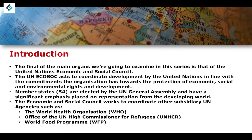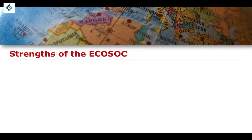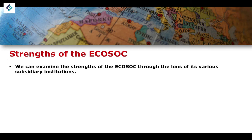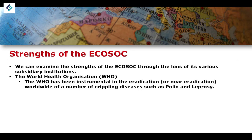Let's look at the strengths and weaknesses of the UN ECOSOC. Beginning with the strengths, we can examine these through the lens of its various subsidiary institutions. Because it coordinates all these different subsidiary institutions, we can suggest that the strengths and successes of these institutions extend somewhat to the success of ECOSOC. The most obvious example is the World Health Organization being instrumental in the eradication or near eradication of a number of crippling diseases worldwide.